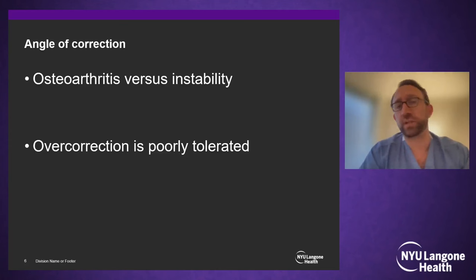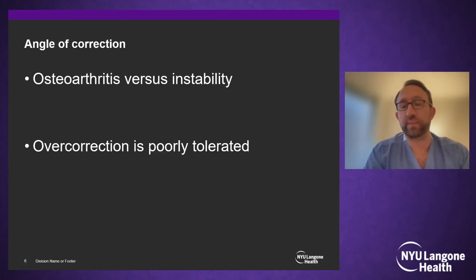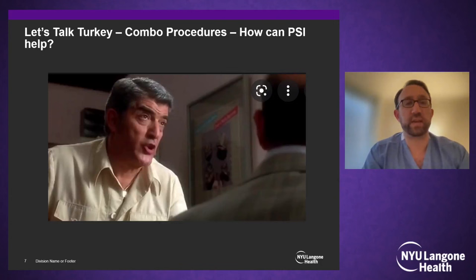We have to understand that overcorrection is poorly tolerated, especially in high-level athletes and younger patients. If overcorrected, patients will feel it — they might have a limb-length discrepancy or altered gait mechanics. Now, let's talk about combination procedures and how patient-specific instrumentation can help.